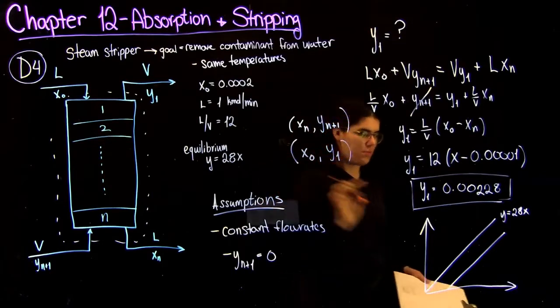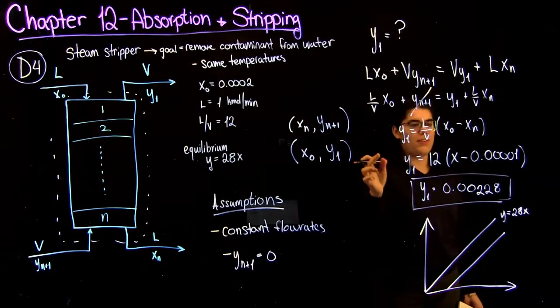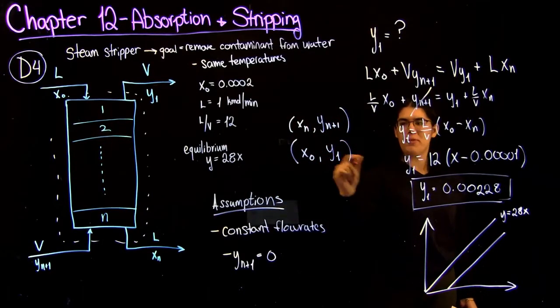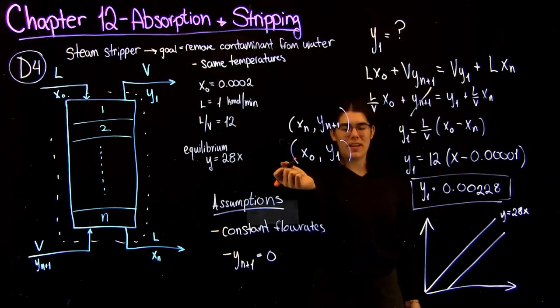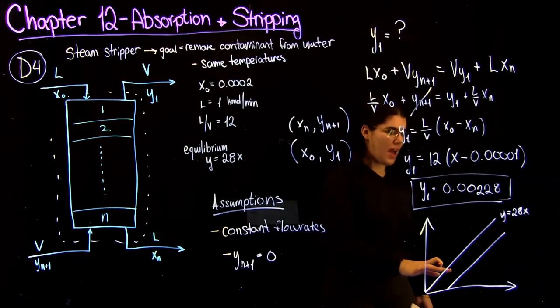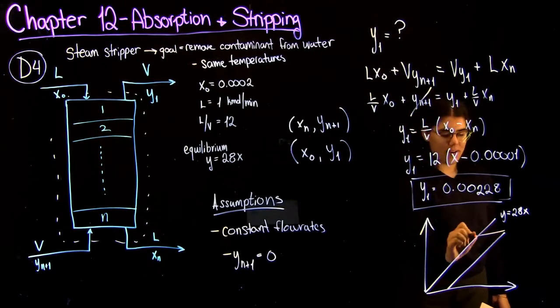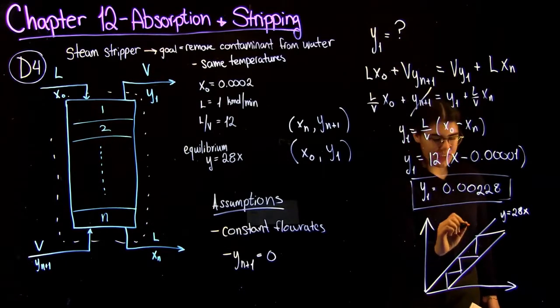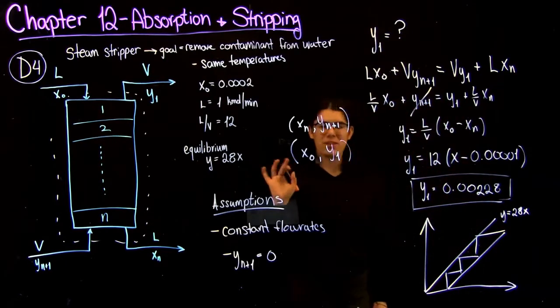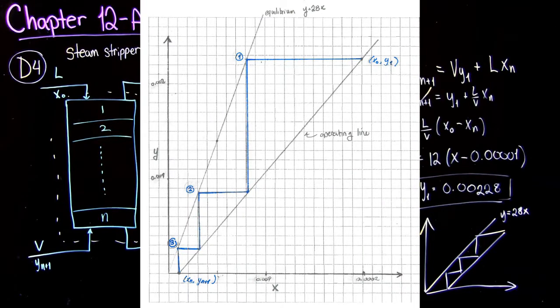And if you just use these two points to construct the line, or you can also do it using this equation. You have both, but I find it's usually easier just to connect two known points on a graph. You'll be able to set this up, and you're going to find that you need three stages to get what you need. I'm going to flash a picture right now of what I did.